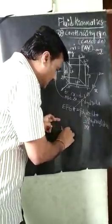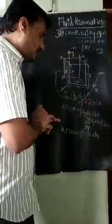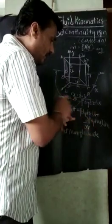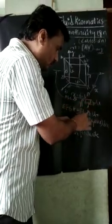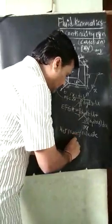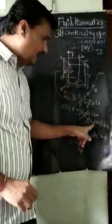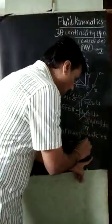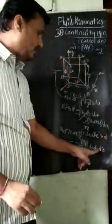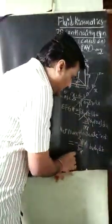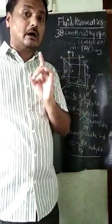The net mass flow rate along the X-direction is the entry minus the exit. When we subtract, the first terms cancel, and we are left with the net mass flow rate along X = −∂(ρu)/∂x · dx·dy·dz.